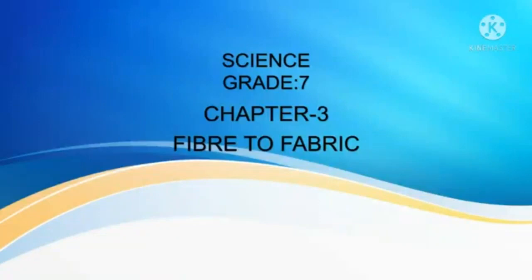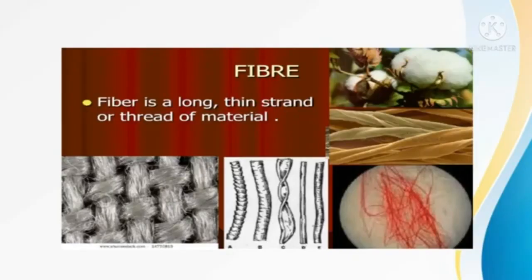Good morning students. Today we are going to see Chapter 3, Fiber to Fabric, in Grade 7 Science NCERT book. In our last class we discussed about fibers, yarns, types of fiber and sources of fiber. Fiber is a long thin strand or thread-like structure.